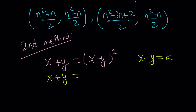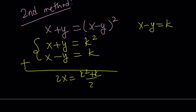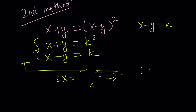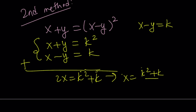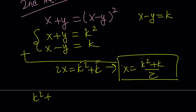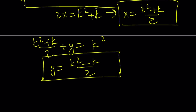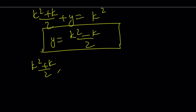By this substitution: since x minus y equals k, x plus y equals k squared. This gives us a system of equations that's super easy to solve — no quadratic needed. Adding the two equations side by side gives 2x equals k squared plus k. Dividing by 2 gives x equals (k squared plus k)/2. Substituting into one of the equations gives y equals (k squared minus k)/2.